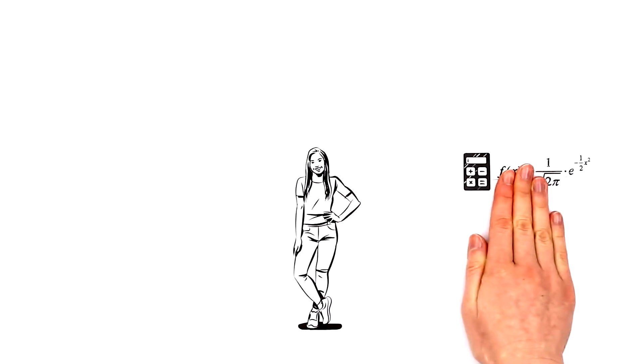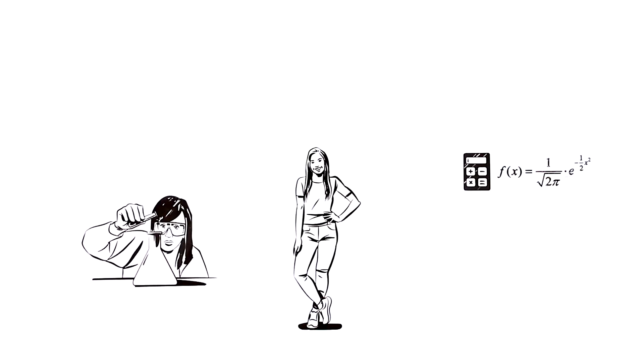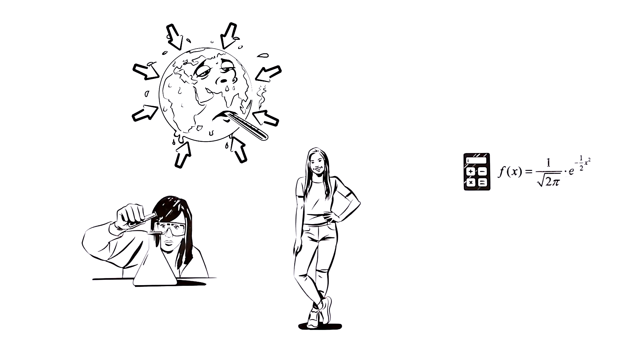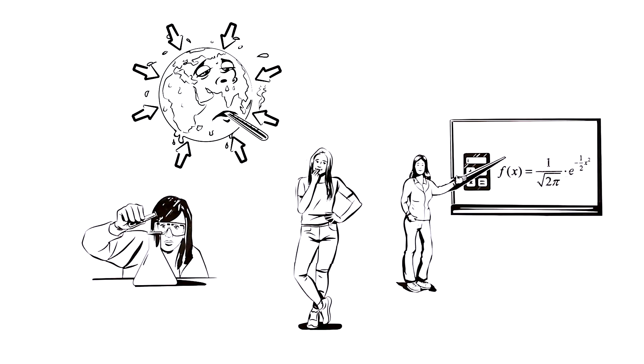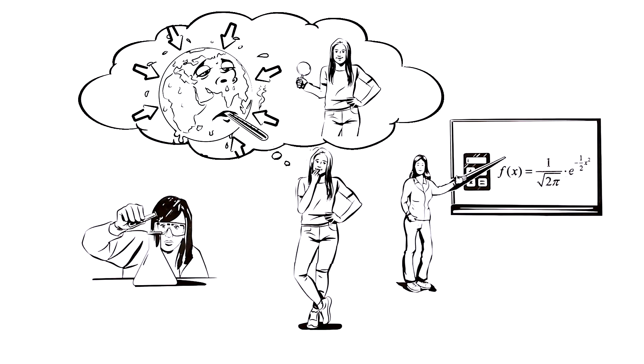Paula is interested in math and natural science. She is especially eager to learn more about climate change and its causes. She is considering pursuing a degree in math and is wondering whether this will allow her to work in climate research in the future.